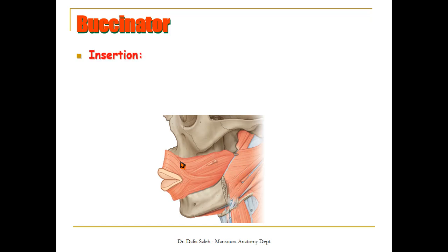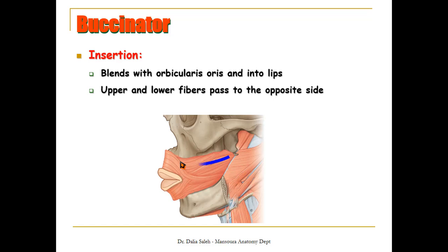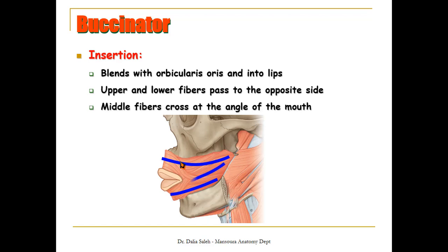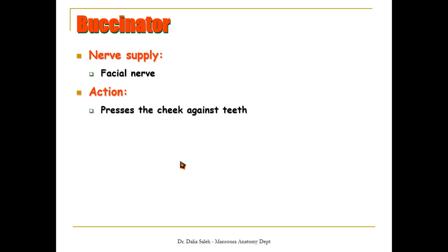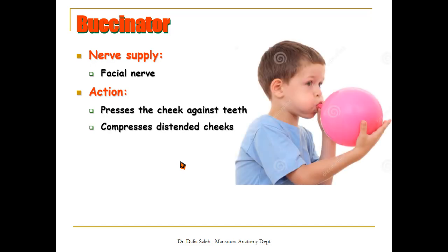For the insertion, the buccinator blends with the orbicularis oris into the lips. The upper fibers pass into the upper lip and the lower fibers pass into the lower lip, while those in the middle criss-cross at the angle of the mouth. Nerve supply is again from the facial nerve. Its action is to press the cheek against the teeth and also to compress the distended cheeks — as if you are blowing into a balloon.